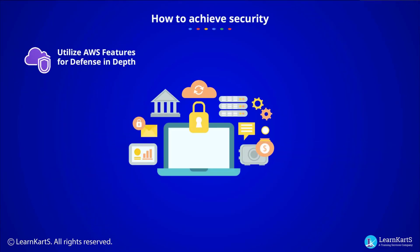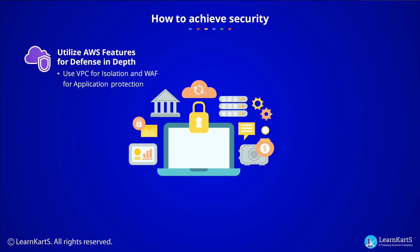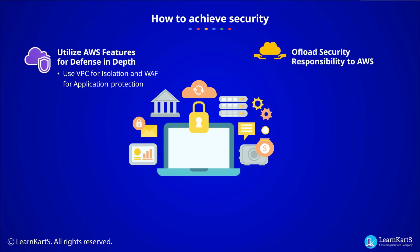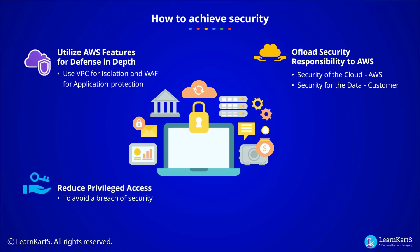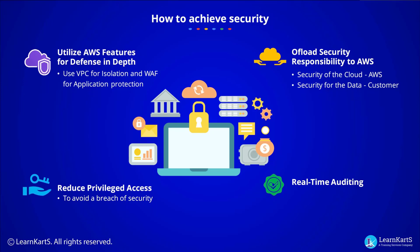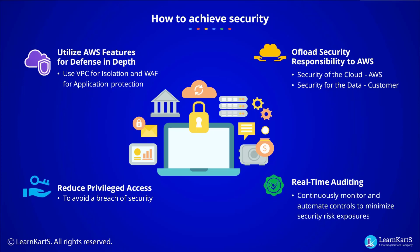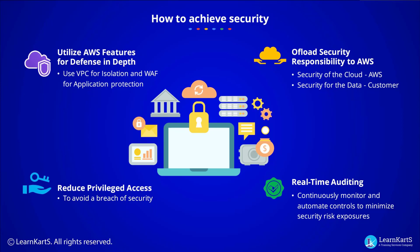Utilize AWS features for defense in depth. Use VPC for isolation and Web Application Firewall for application protection. Offload security responsibility to AWS. Use privileged access to avoid breach of security. Real-time auditing: to continuously monitor and automate controls to minimize security risk exposures on the cloud.